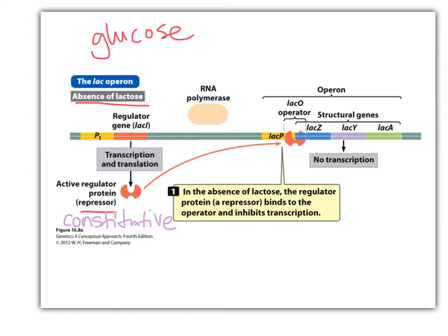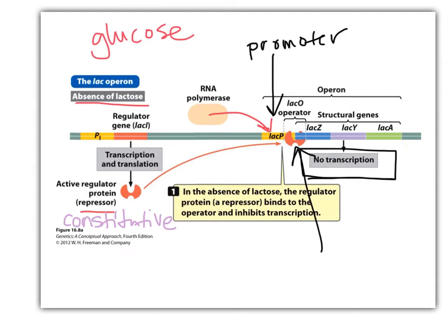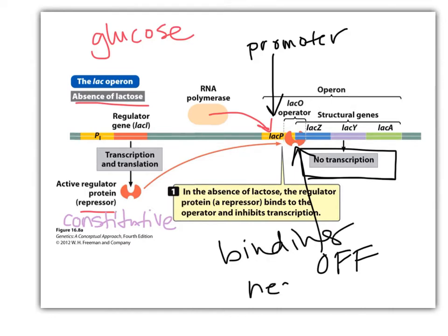One thing to note: RNA polymerase can bind to lac p, the promoter, just fine — there's absolutely nothing blocking RNA polymerase from binding there. Lac p is the promoter, and RNA polymerase binds there no problem. But when the repressor is bound to the operator, transcription is still blocked. Something binds the operator and turns off transcription — that's negative regulation.